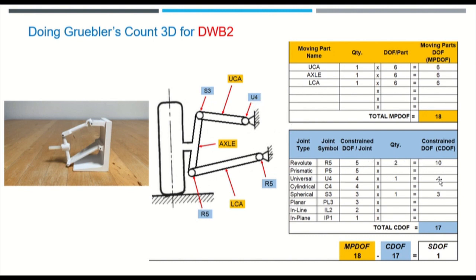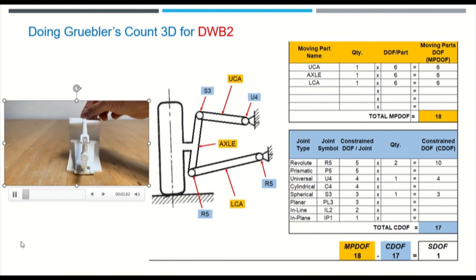So if you do the math again, we take 18 subtract 17 equals positive one. And that's good. That means now your mechanism is not locked and it's free to animate.